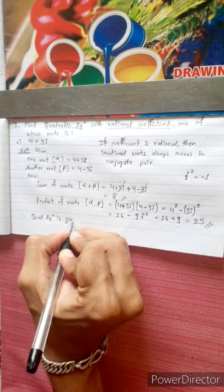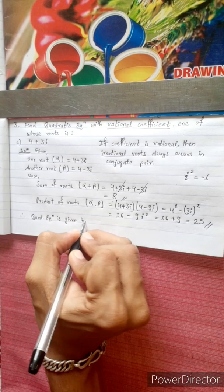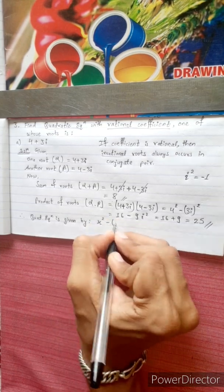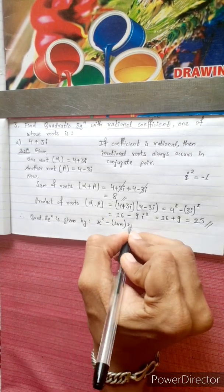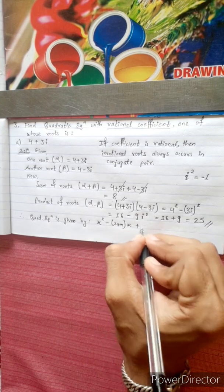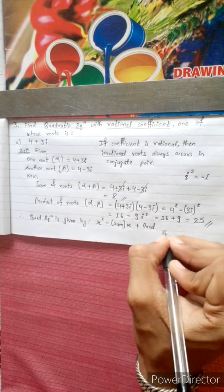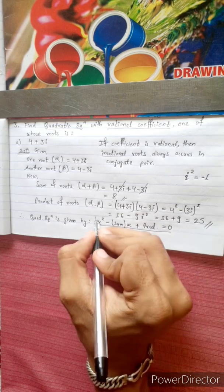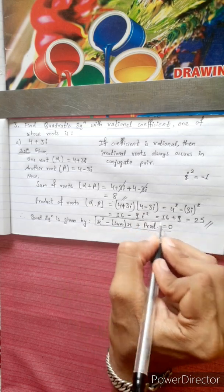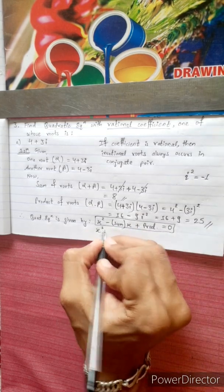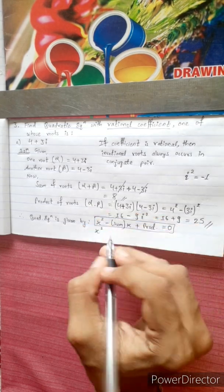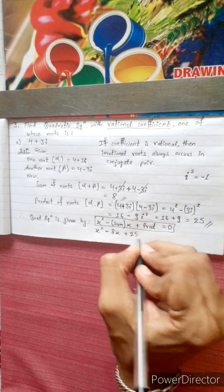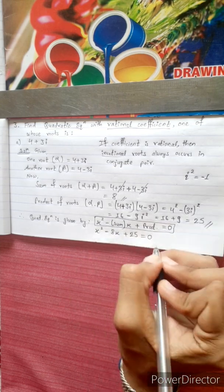The quadratic equation is given by the formula: x squared minus (sum of roots) times x plus (product of roots) equals 0. Substituting: x squared minus 8x plus 25 equals 0. This is our required equation.